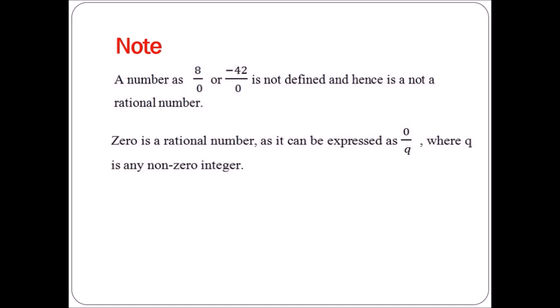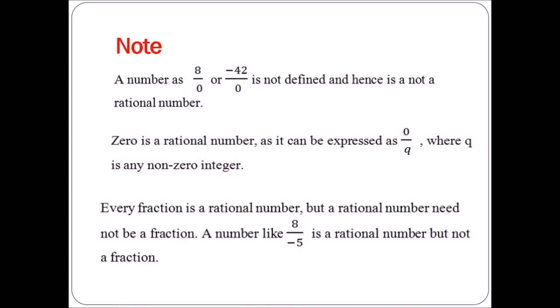Zero is a rational number as it can be expressed as 0 upon Q, where Q is any non-zero integer — that is, 0 divided by any number. Also, every fraction is a rational number, but a rational number need not be a fraction. For example, 8 upon minus 5 is a rational number but not a fraction, because for a fraction expressed as P upon Q, both P and Q are whole numbers, not integers.